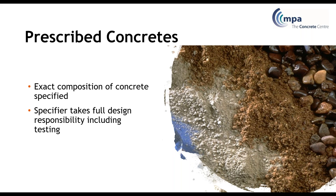The other three methods are also worth considering. The first is prescribed concretes, where the specifier gives the exact composition of the concrete to the producer, and the specifier takes full design responsibility. You cannot specify a strength with prescribed concrete — the assumption is that you know what strength it will achieve, and it's not up to the concrete producer to reach that strength; it's up to you to have the mix right. It's worth considering prescribed concrete if you have a concrete technologist as part of your team.